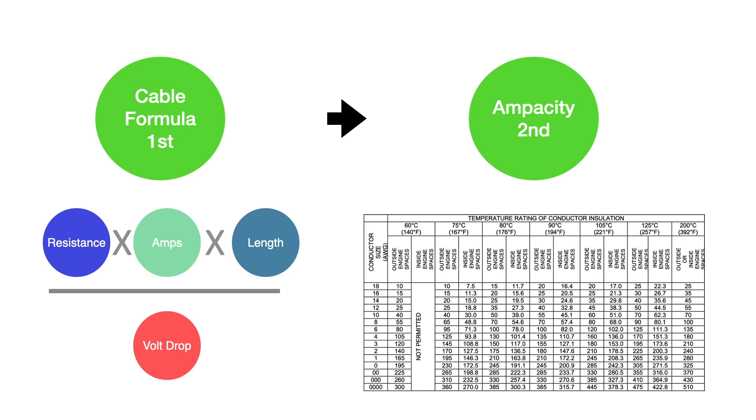So to summarize, we always calculate cable size first, based on voltage drop, and then compare this to the ampacity table, to ensure the cable has sufficient rating for the task in hand. In most cases, the cable size formula will specify a thicker cable than the ampacity table. If this is not the case, just use a bigger cable size.